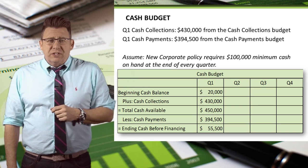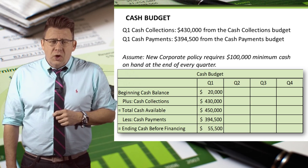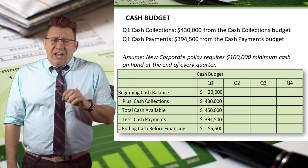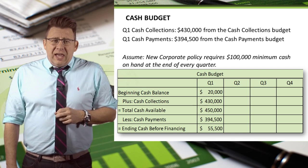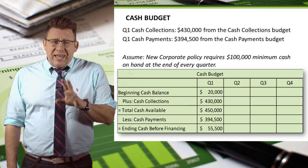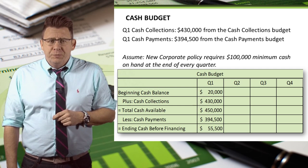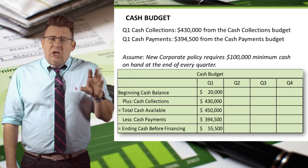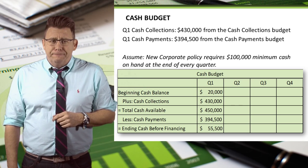Here I've just assumed it's $20,000. We add Q1 cash collections from the cash collections budget, and we subtract Q1 cash payments from the cash payments budget. This gives us a subtotal called ending cash balance before financing.